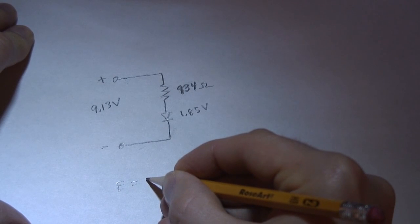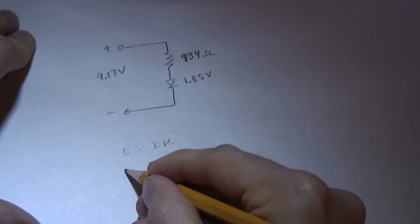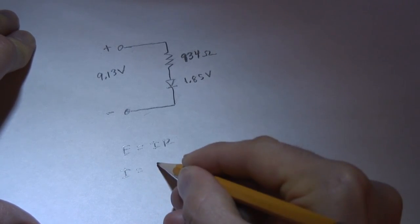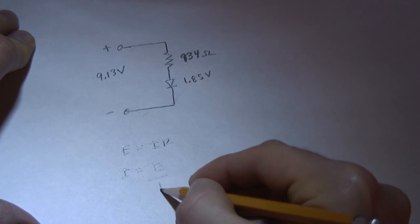Using Kirchhoff's law, we know that E equals IR. So the current is equal to E divided by R.